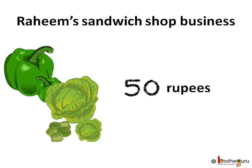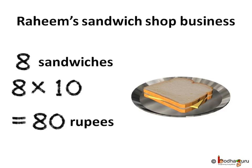Assume someday Rahim buys vegetables spending 50 rupees. For simplicity, let us assume the money spent on buying bread, etc. is included in this. He makes 8 sandwiches from it. He sells each sandwich for 10 rupees. So he earned 10 into 8, which is 80 rupees.